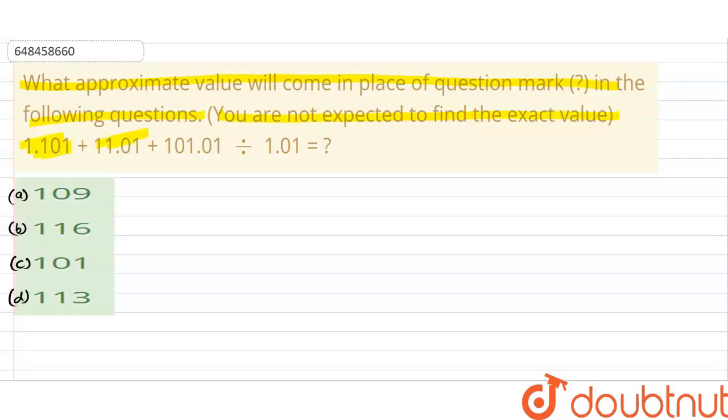And the question is: 1.101 plus 11.01 plus 101.01 divided by 1.01 is equal to question mark. We need to find the value of the question mark.